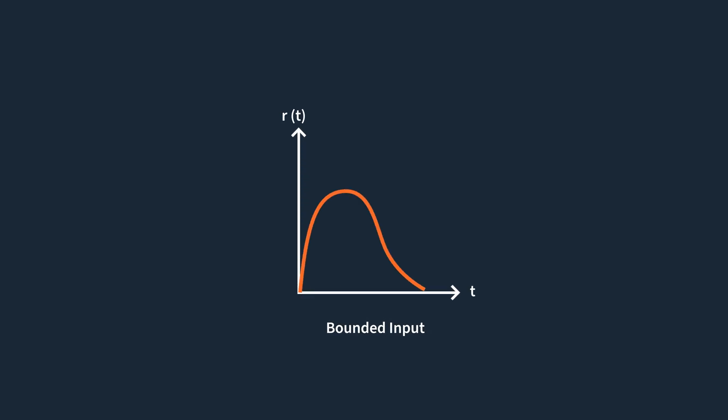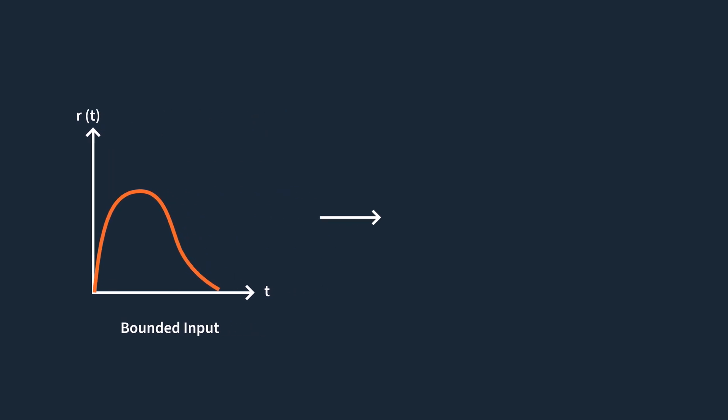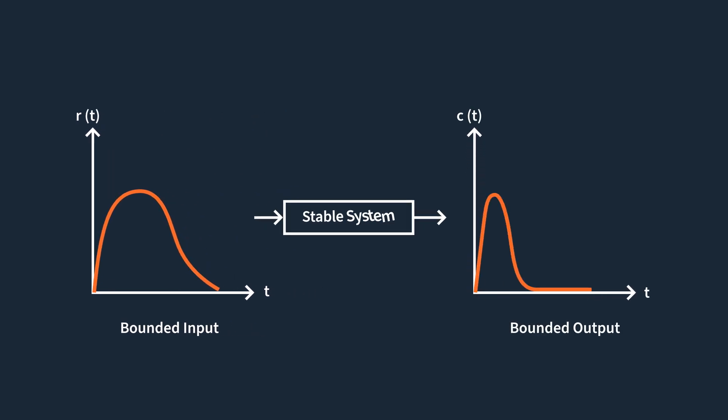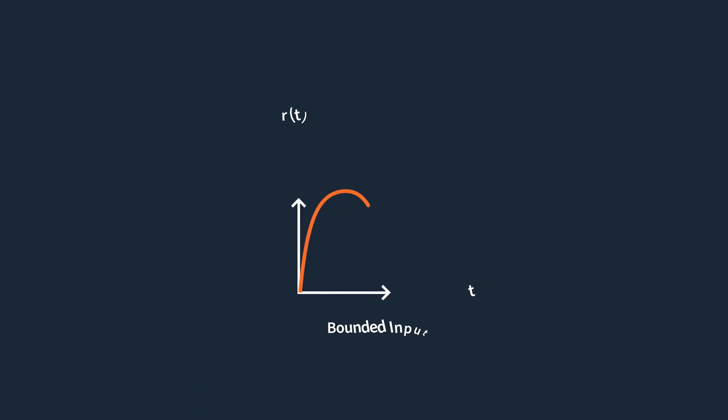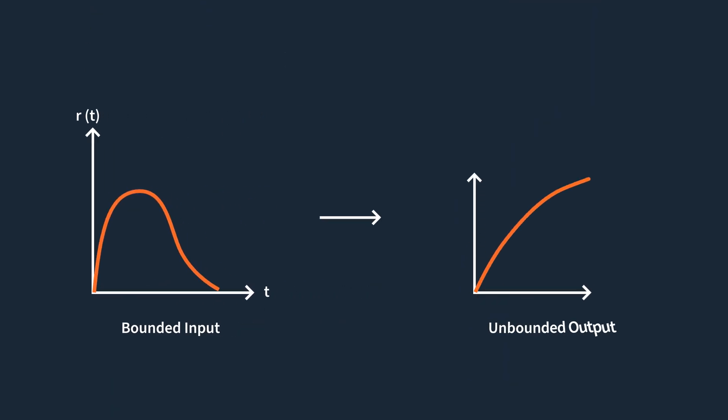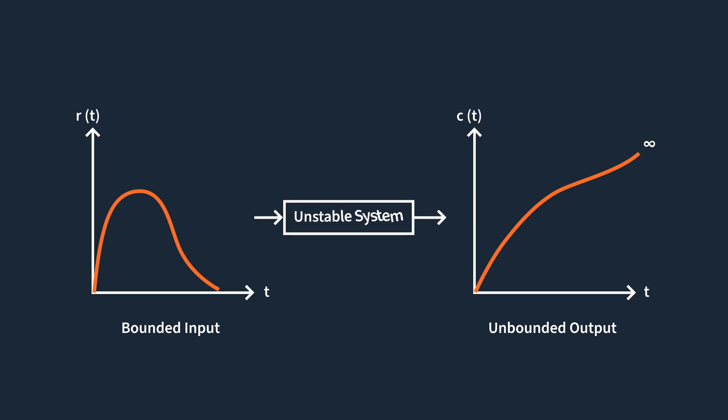We can say an input is bounded if the input lies within definite limits of the system. If it's not within the limits of the system, it's an unbounded input. So we now have two rules: first, for every bounded input signal, if the system response is also bounded, then that system is stable; second, for any bounded input, if the system response is unbounded, then that system is unstable. This is commonly called BIBO stability — bounded input bounded output stability.